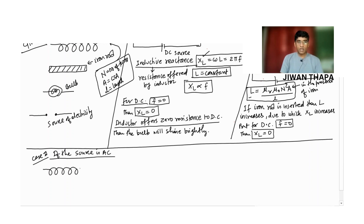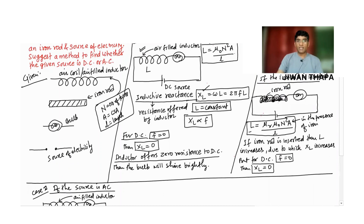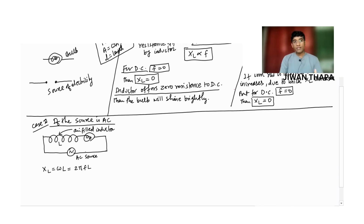I am drawing the circuit — this is the bulb, and we have an AC source, and we have an inductor having inductance L. This is an air-filled inductor. We know XL, that is inductive reactance, equals ωL equals 2πfL. If L, the inductance of the given inductor, is constant, then XL is proportional to frequency.